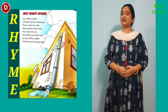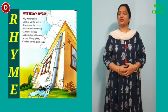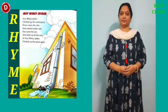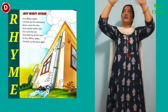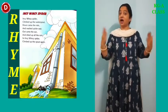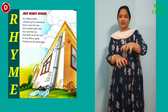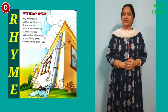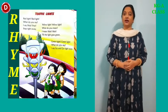Let's practice the rhyme Incy Wincy Spider with actions together. Incy Wincy Spider climbed the water spout, down came the rain and washed the spider out, out came the sun and dried up all the rain, so Incy Wincy Spider climbed the spout again. In this way, children, you have to recite this rhyme.